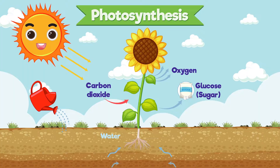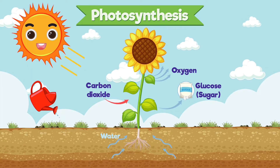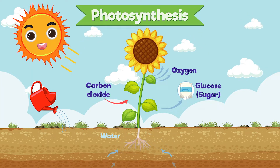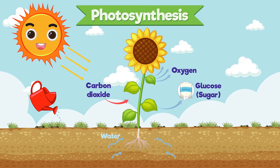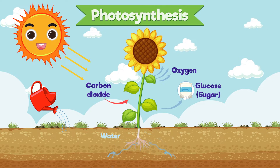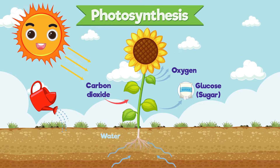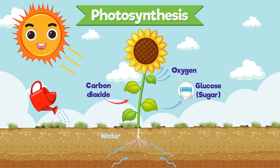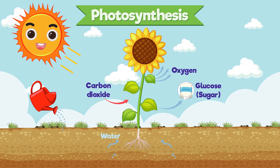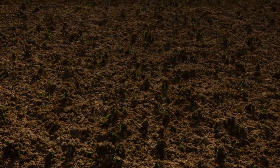During photosynthesis, plants use sunlight to convert carbon dioxide and water into glucose and oxygen. The glucose is then used to create more complex molecules like cellulose and starch, which make up the majority of a plant's mass.